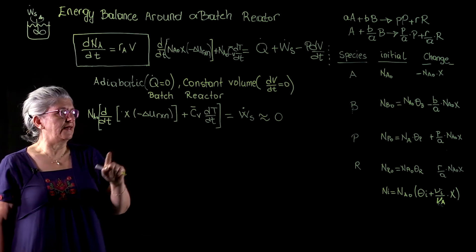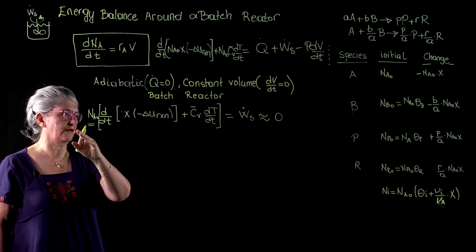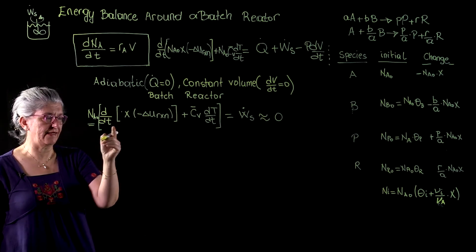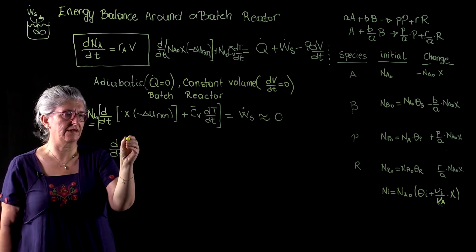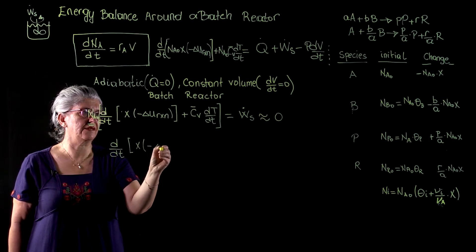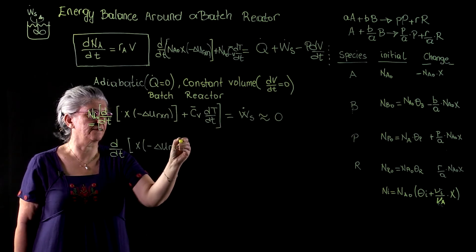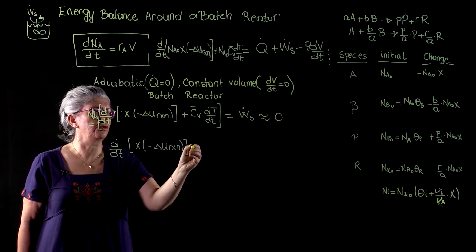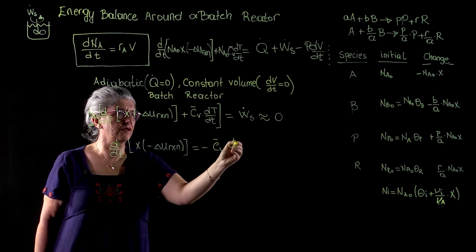Yes, now if this term becomes zero and a zero term drops out of the equation that we have, then d over dt x times minus delta u reaction to be equal to minus cv bar dt over dt.